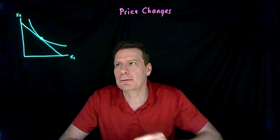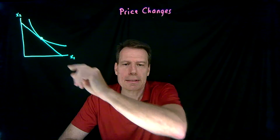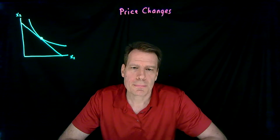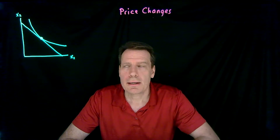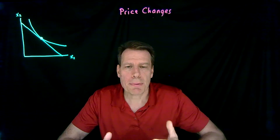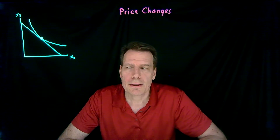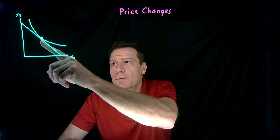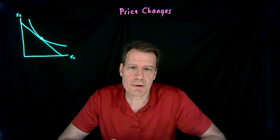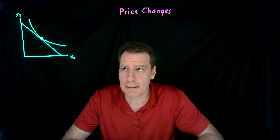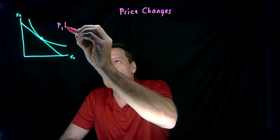So let's think about a consumer whose original optimal consumption bundle lies here. Suppose it's me and suppose that X1 is gasoline and X2 is some composite good of all other goods. This is my original consumption bundle at the original prices that I face. Now suppose that the price of gasoline — the price of good one — increases.